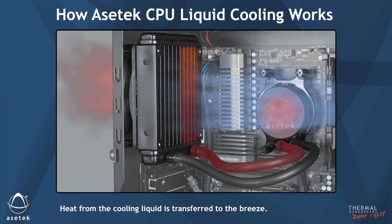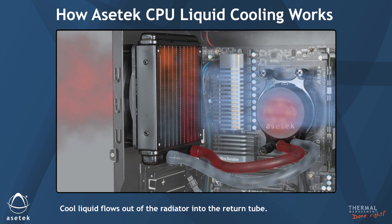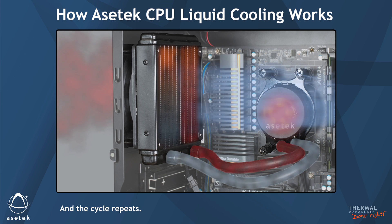Heat from the cooling liquid is transferred to the breeze, and is quietly blown out of the chassis, keeping the inside cool. Cool liquid flows out of the radiator into the return tube, which delivers it back to the cold plate. And the cycle repeats.